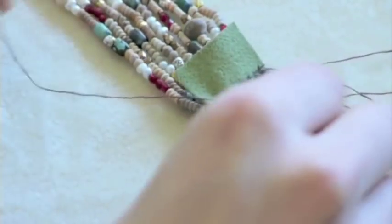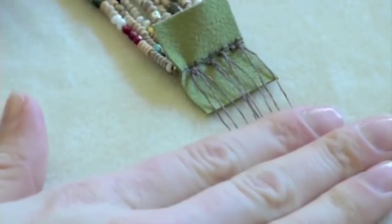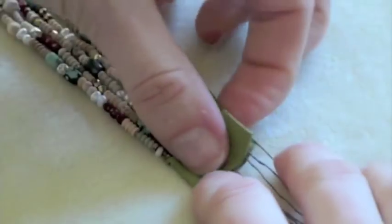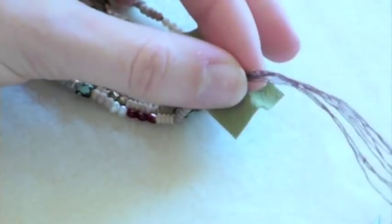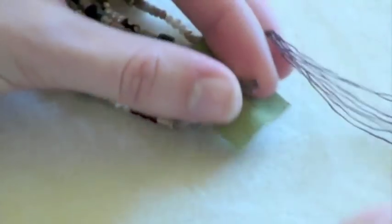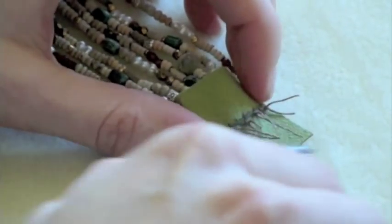Pull taut, and then one more for added security. If you'd like, you can take some hypocement, which we also carry online, and you can dab the knot on each of these before you fold it over. Now what I'm going to do is just go ahead and trim the tails, because we don't need that anymore. You can make them shorter if you'd like. They're all going to be covered up.